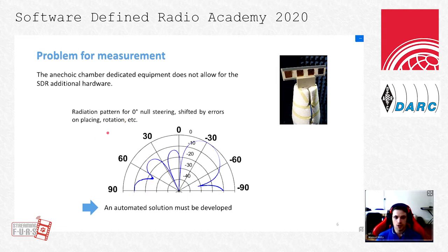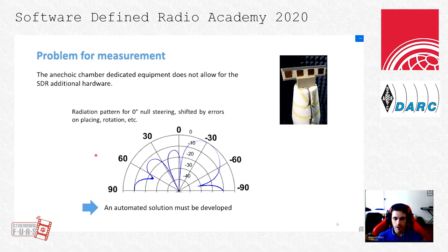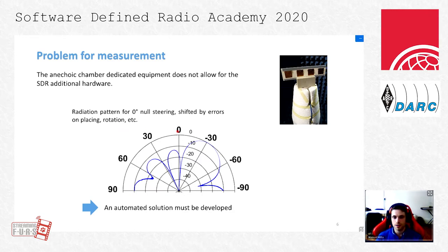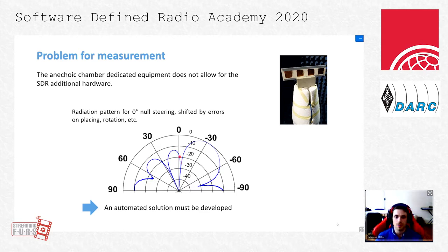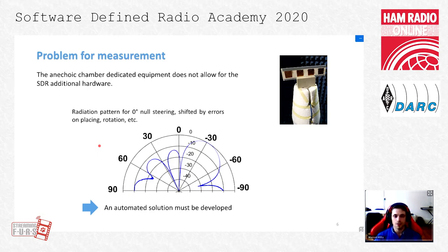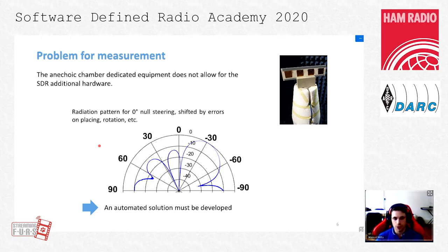This figure shows early attempts we made at measuring the radiation pattern of a ULA using SDR. In this configuration it was intended that a radiation null would be steered towards the zero degree direction. As you can see, the sources of error result in almost four degrees of angular shift between the measured null and the intended direction. Therefore, when using SDR to steer antenna arrays, we had a need for an automated solution to carry out our measurements.